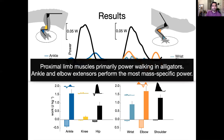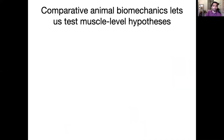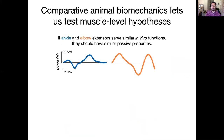So what our inverse dynamics tells us is that proximal limb joints primarily do propulsive power during walking in alligators, but ankle and elbow extensors perform the most mass-specific power. This is the result that really interests us because we know that we could characterize distal limb muscles in situ.